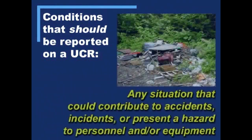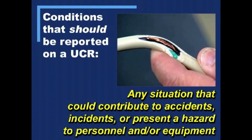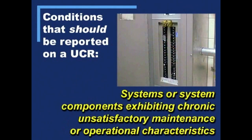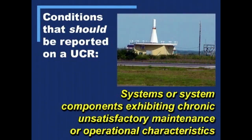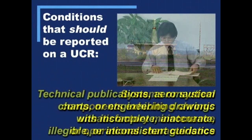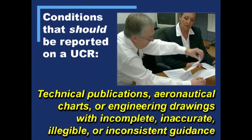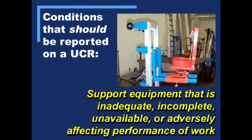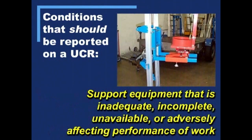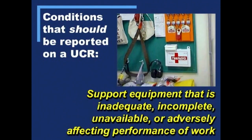Here are the conditions that should be reported using a UCR: any situation that could contribute to accidents, incidents, or present a hazard to personnel and/or equipment; systems or system components exhibiting chronic unsatisfactory maintenance or operational characteristics; technical publications, aeronautical charts, or engineering drawings with incomplete, inaccurate, illegible, or inconsistent guidance; and support equipment, such as tools and materials, that is inadequate, incomplete, unavailable, or adversely affecting performance of work.